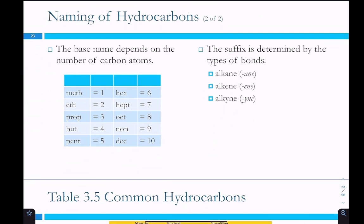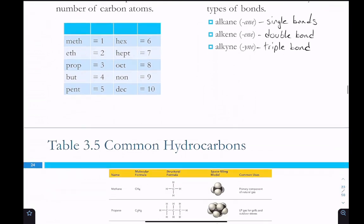The suffix is determined by the types of bonds. If it's all single bonds then it's ANE. If there's at least one double bond then it's ENE. And then YNE is at least one triple bond.